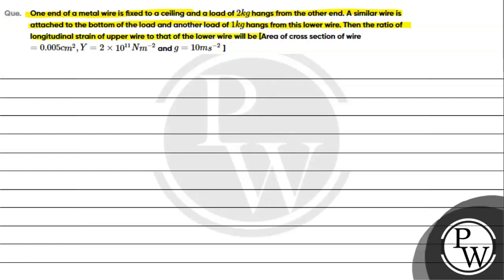Area of cross section of wire is 0.005 cm², Y is 2 × 10¹¹ N/m², and g is 10 m/s².